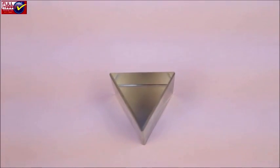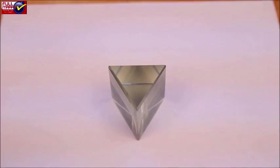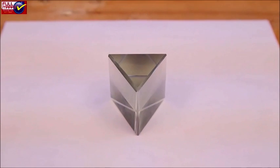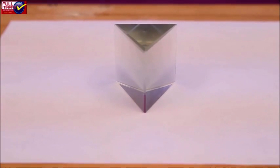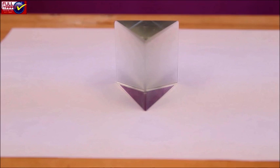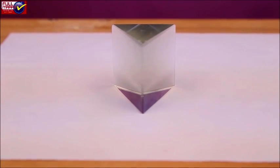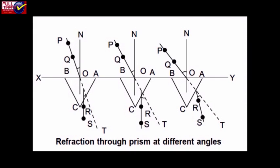Drawing Incident Ray: Fix a white sheet of paper on a drawing board with the help of drawing pins. Draw a straight line XY in the middle of the sheet and make it parallel to the side of the sheet. Mark different points O at suitable distance on line XY. Draw normal to XY at points O as shown in the figure.